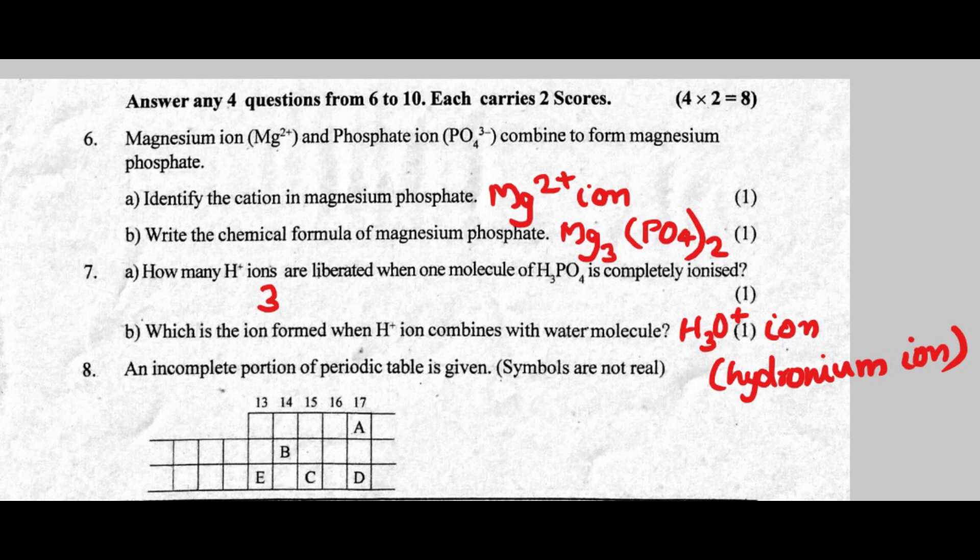Write the chemical formula of magnesium phosphate. The formula is Mg3(PO4)2.